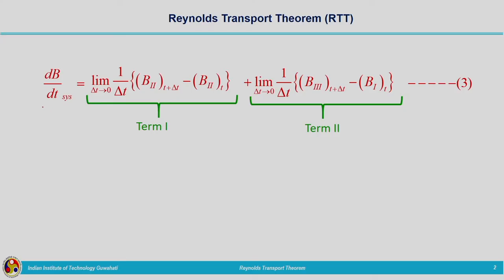Let us continue from where we stopped. The time rate of change of extensive property of the system is related to two terms. The first term is something related to the control volume, and the second term is something related to the control surface. The limit as delta t tends to 0 of (1/delta t)(b2 at t+delta t minus b2 at t) was found to be the time rate of change of extensive property stored within the control volume. This term has been derived; now we move on with the second term.